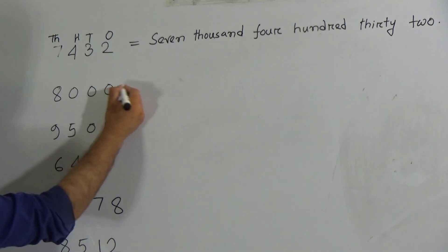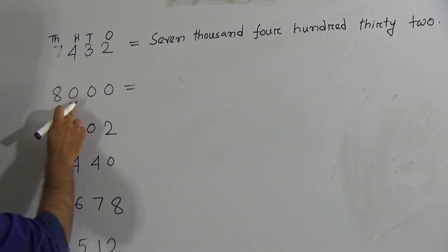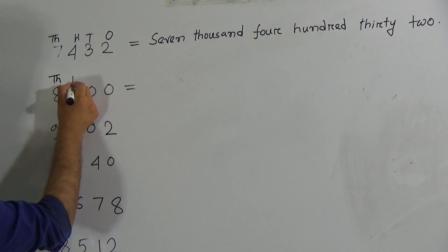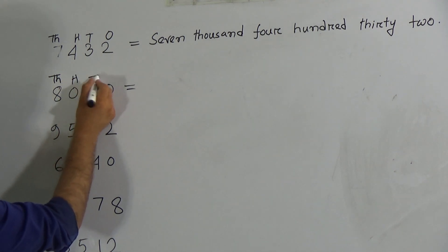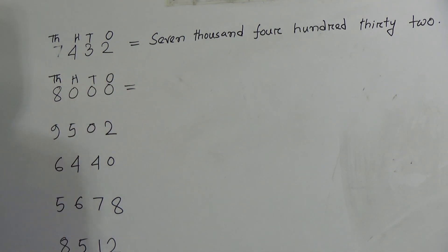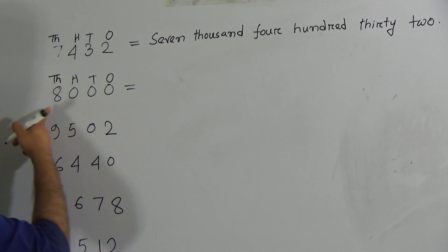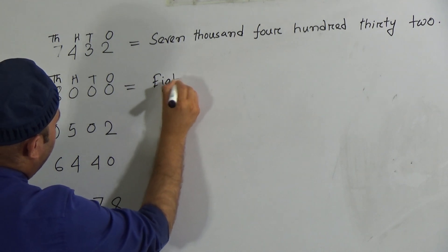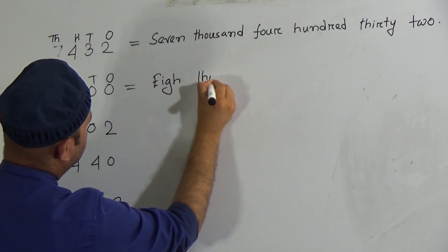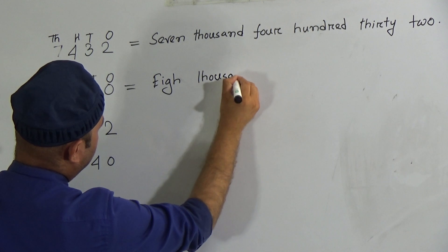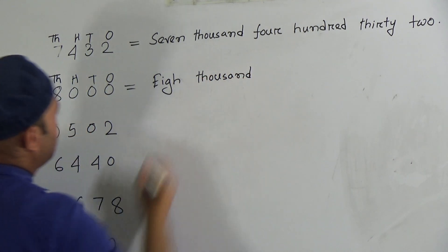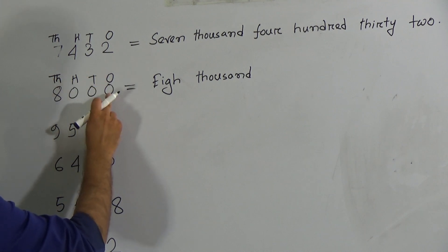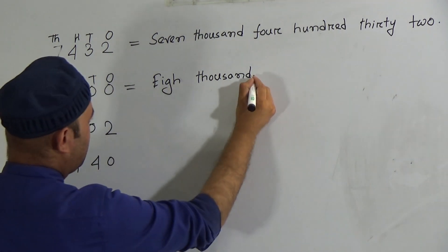The next number is 8,000. Here 8 is in the thousand place, and there is zero in the hundred place, zero in the tens place, and zero in the ones place. So in words this is simply called eight thousand.